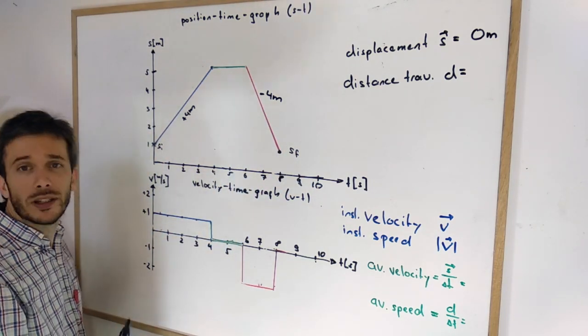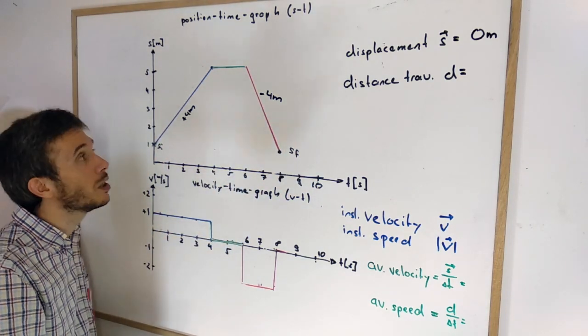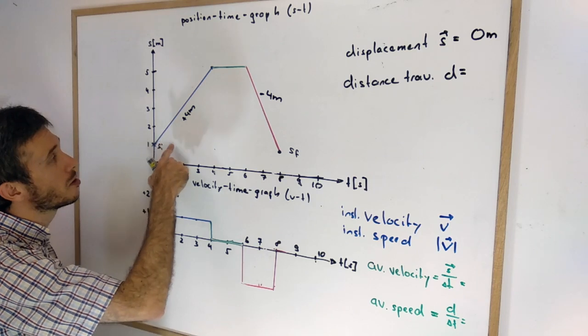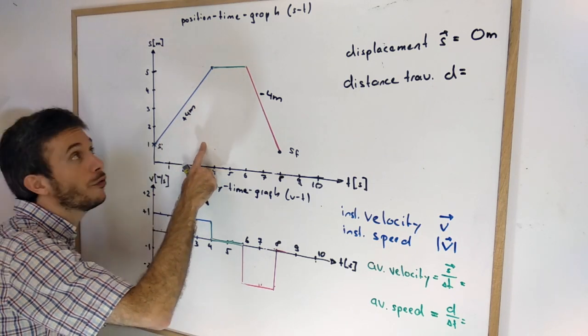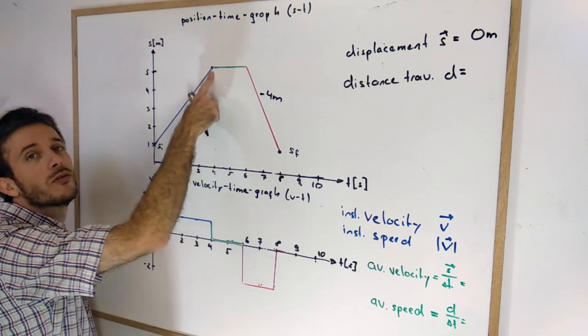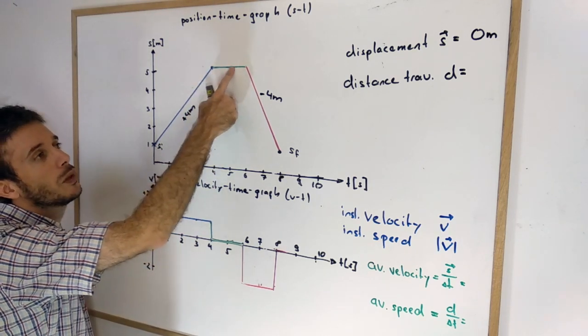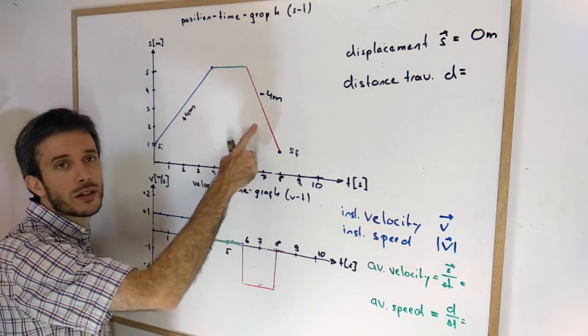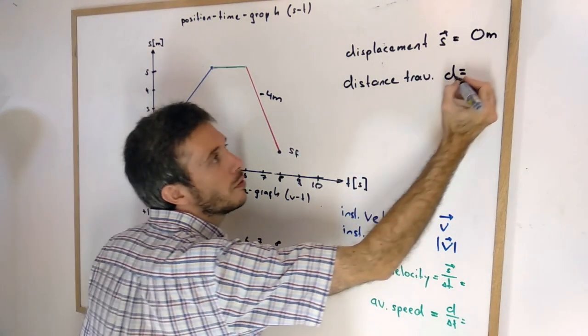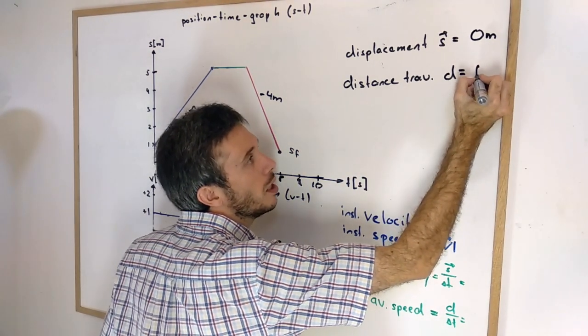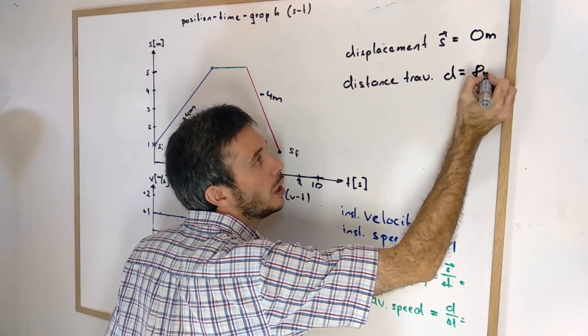Now what's the total distance traveled? The distance traveled is the 4 meters we traveled up plus the 4 meters traveling down, giving us 8 meters.